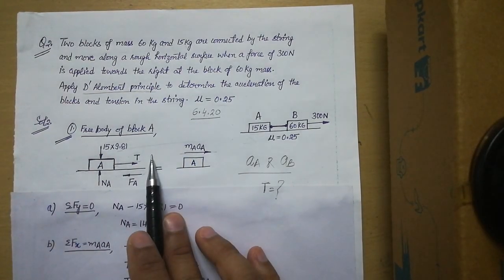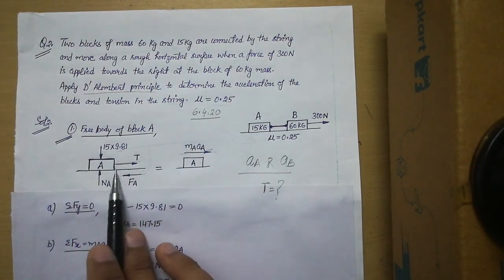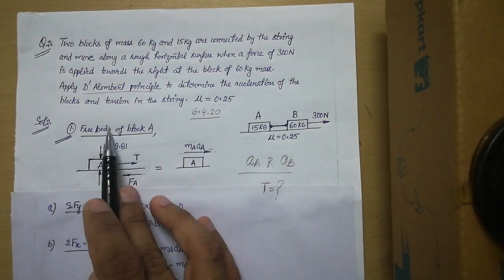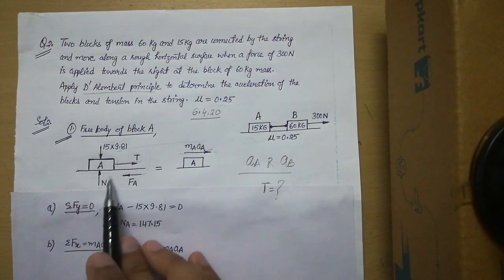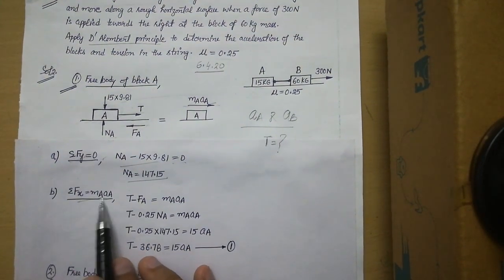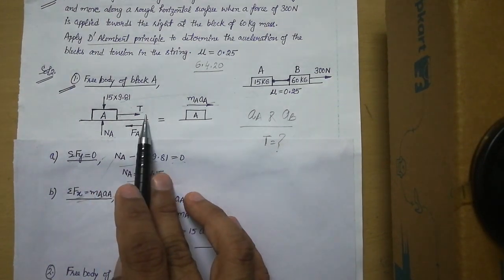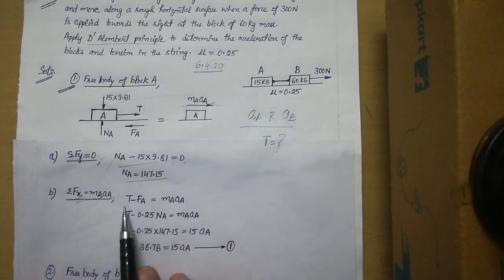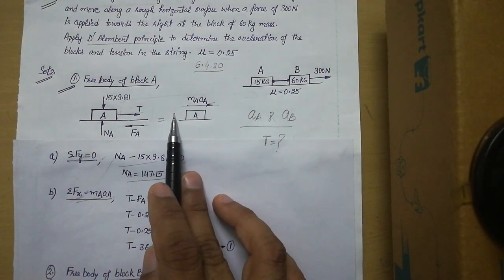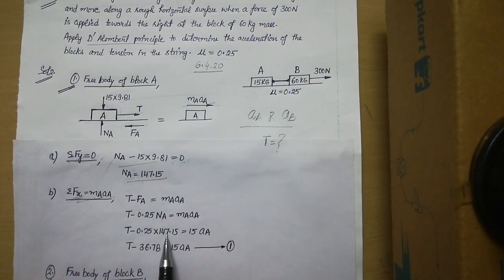For block A, two equations apply. First, ΣFy = 0 (no vertical motion): NA − 15 × 9.81 = 0, giving us the value of NA. Second, ΣFx = MA·AA: T minus friction FA equals MA·AA. Friction FA = μ·NA = 0.25 × NA. Substituting the known value of NA, we get Equation 1: T − 36.78 = 15·AA.